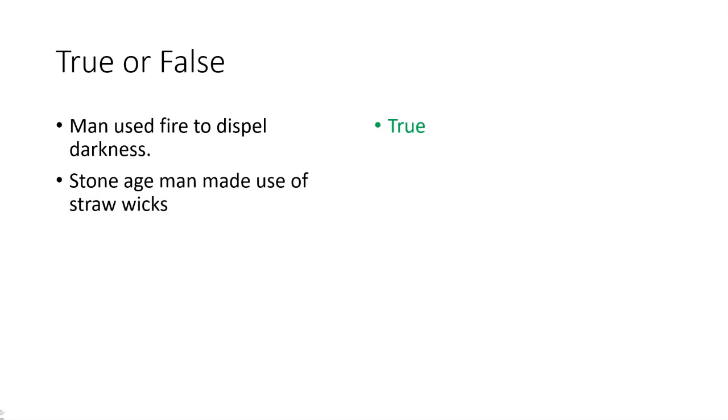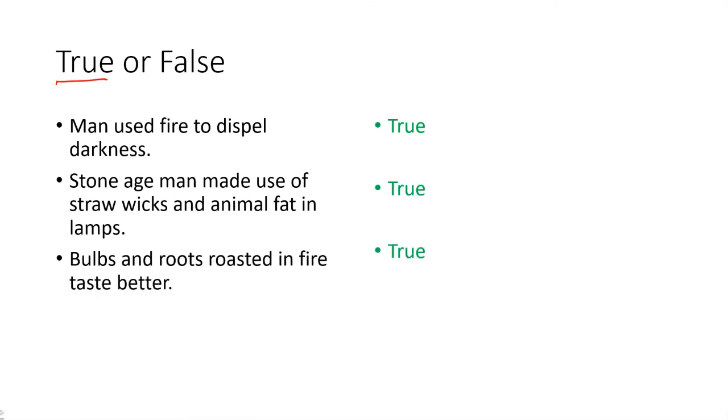Let's revise now. True or false? Man used fire to dispel darkness. True. Stone Age man made use of straw wicks and animal fat in lamps. True. Bulbs and roots roasted in fire taste better. True. Man cooked on fire from prehistoric time. False.